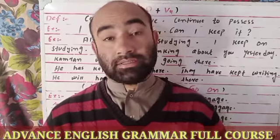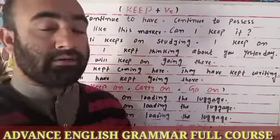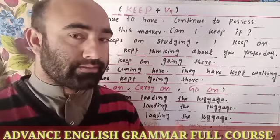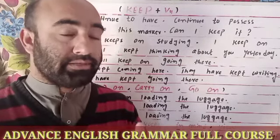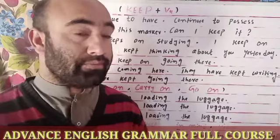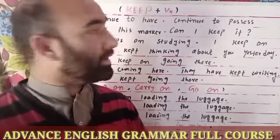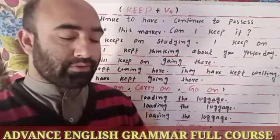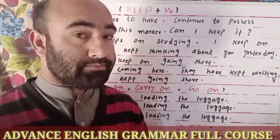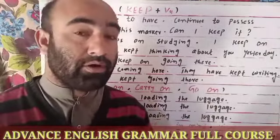Now let's talk about the structure of this word: Keep plus the fourth form of the verb. Whenever we add '-ing' with the base form of the verb, that is called the fourth form of the verb. So whenever the word 'keep' comes in a sentence, we have to put the fourth form of the verb after it.